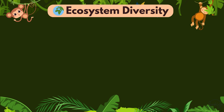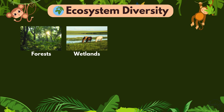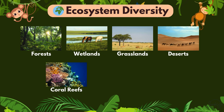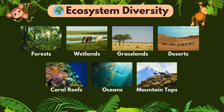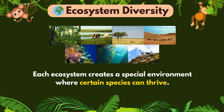Think of forests, wetlands, grasslands, deserts, coral reefs, oceans, and even mountaintops. Each ecosystem creates a special environment where certain species can thrive.